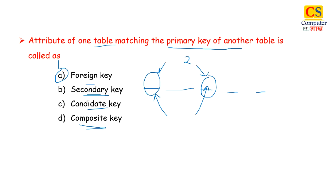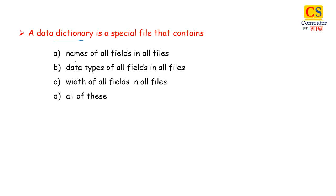Our last question is, a data dictionary is a special file that contains: option A is names of all fields in all files, true. Data types of all fields, again true. Width of all fields, again true. So right answer will be option D, all of these. Data dictionary, we have created our database and the structure, the naming we have created attributes and what types you have stored in the data dictionary.